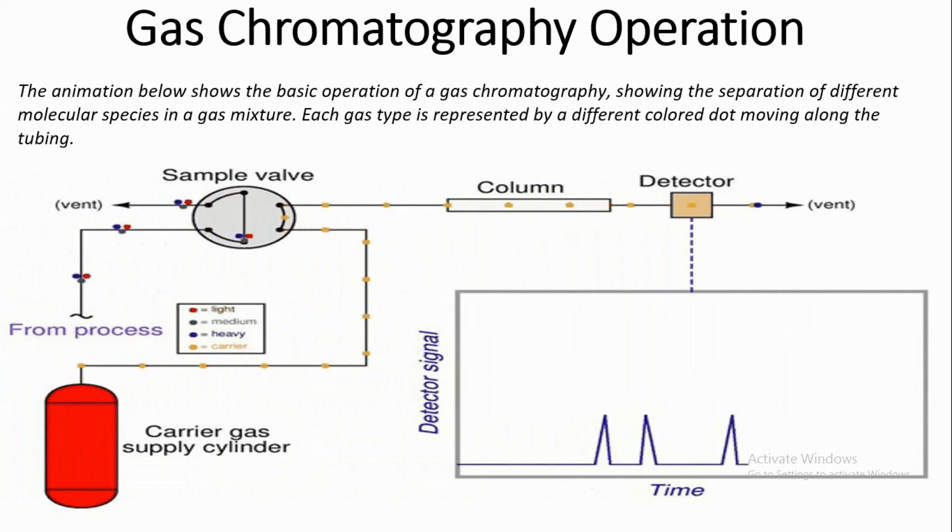Gas chromatography operation: The animation shows the basic operation of a gas chromatography, showing the separation of different molecular species in a gas mixture. Each gas type is represented by a different colored dot moving along the tubing.